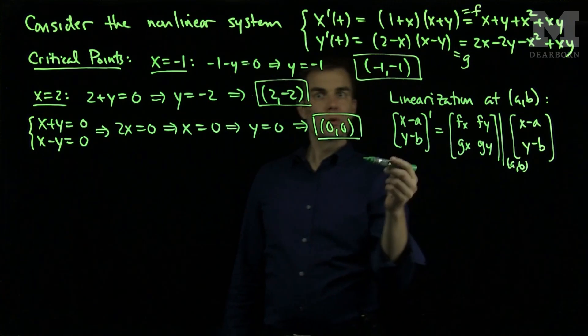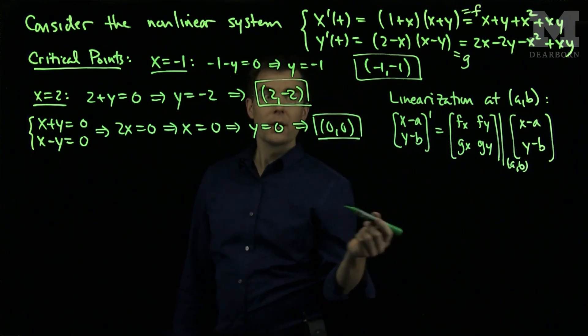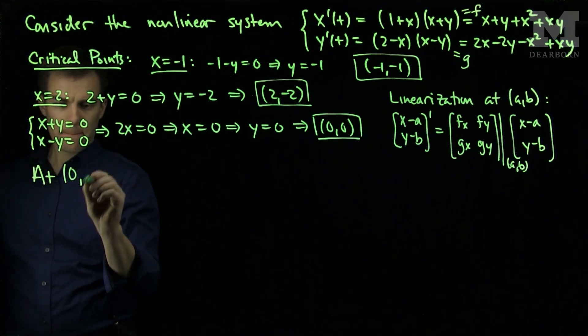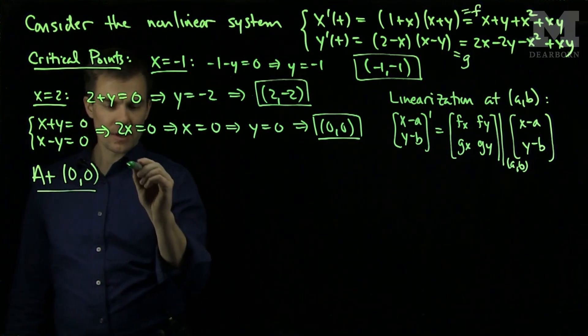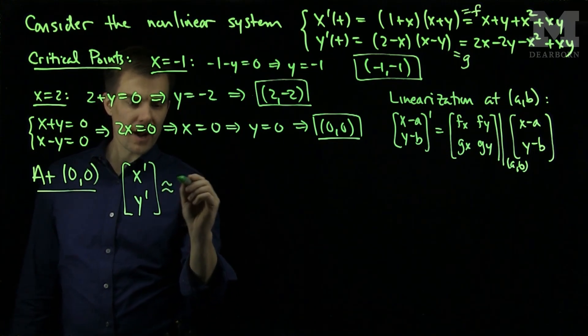So let's choose one of the critical points and classify its stability by the linearization. At zero, zero, we will have that our system is approximately x, y prime, is approximately...